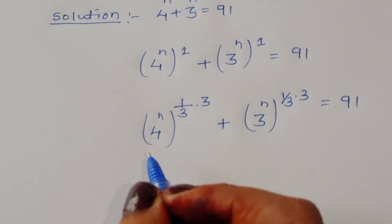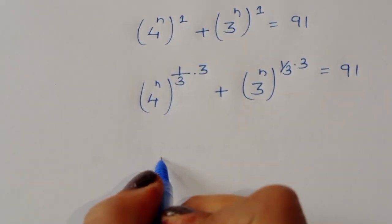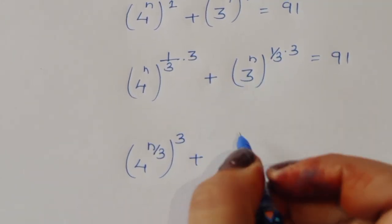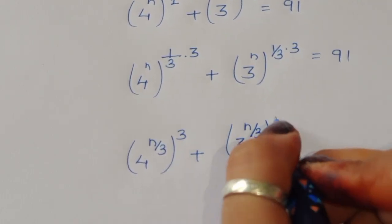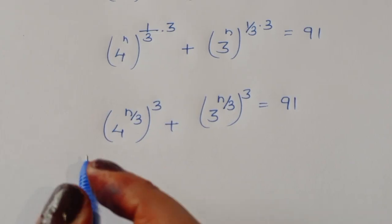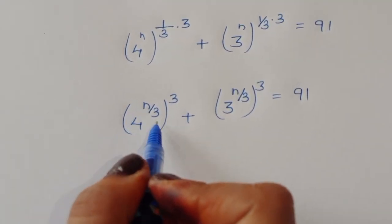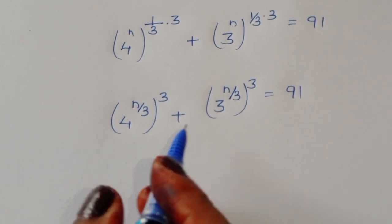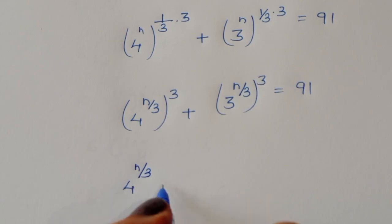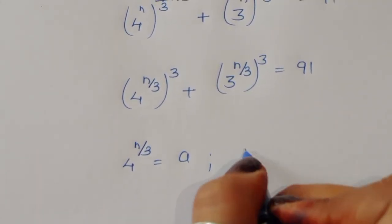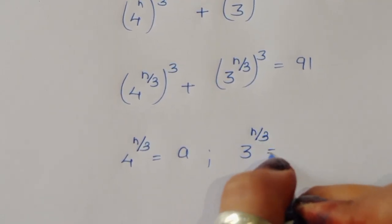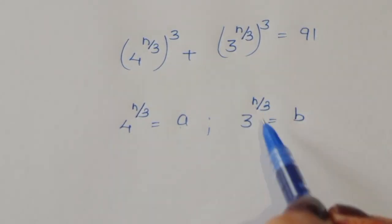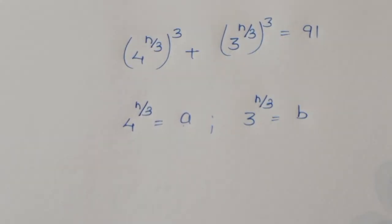We can write this as (4^(n/3))^3 + (3^(n/3))^3 = 91. To make this easier, let's consider a = 4^(n/3) and b = 3^(n/3). So 4^(n/3) = a means we write a³, and 3^(n/3) = b means we write b³.